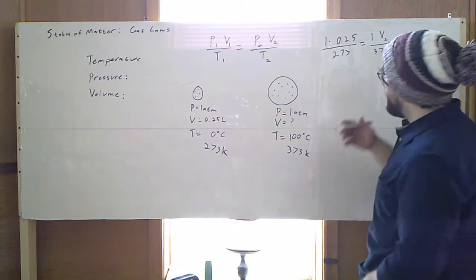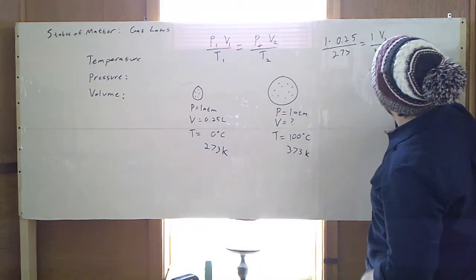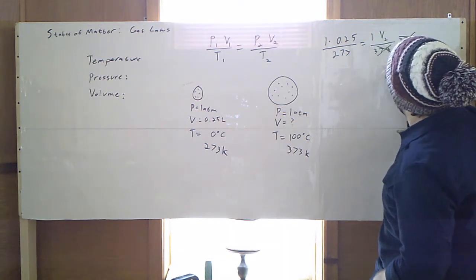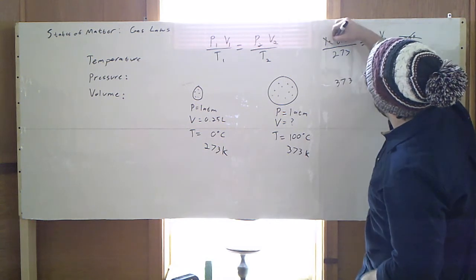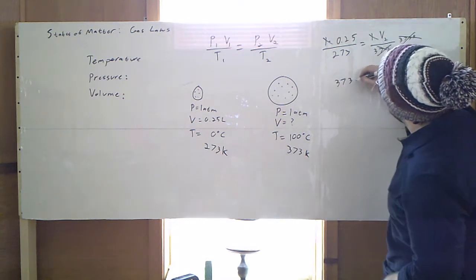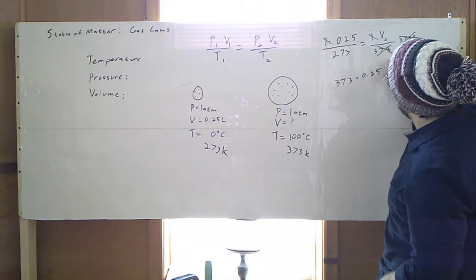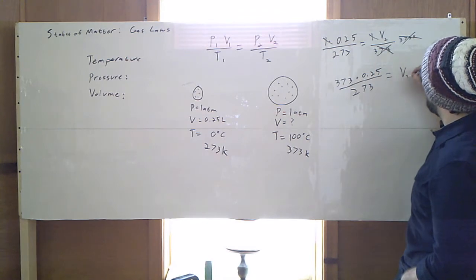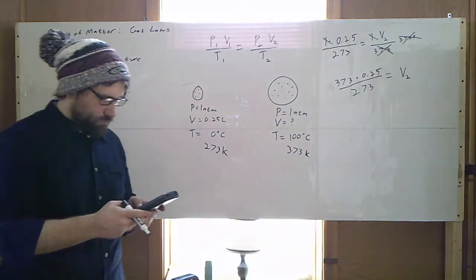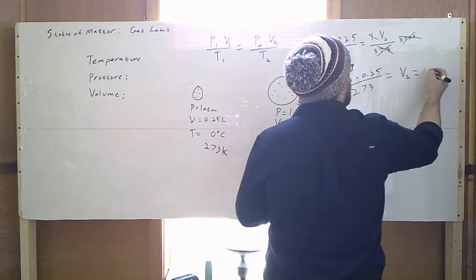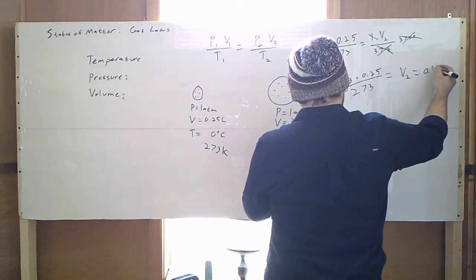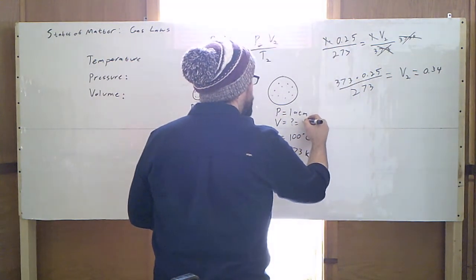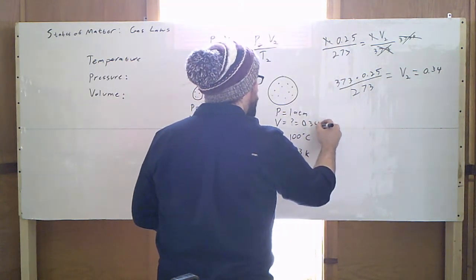So rearrange that, I'm going to get 373 on this side. I'm going to take 373, multiply it by both sides. It's going to cancel out over here. I'm going to get 373. The 1's are just going to cancel out. Times 0.25, divided by 273. That leaves me with V2 being equal to 0.34 liters.